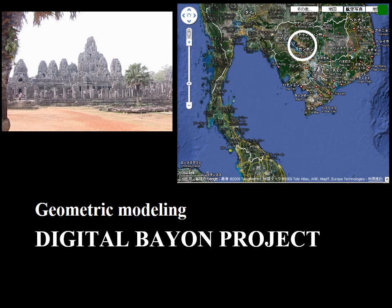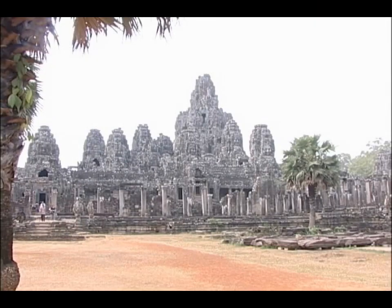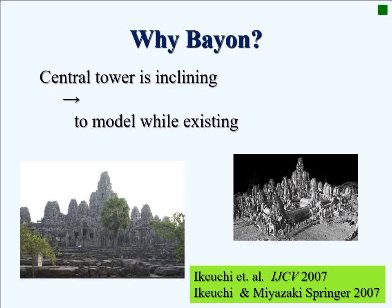As an example of the eHeritage Project, I will explain our Digital Bayon Project to digitize Bayon Temple located in Angkor Ruin, Cambodia. The Bayon Temple is located at the center of Angkor Thom. Why do we conduct this project on Bayon Temple? Because the central tower is inclining year by year, and there is a possibility that it could collapse in the near future. Thus, it is a good idea to model it while it still exists.